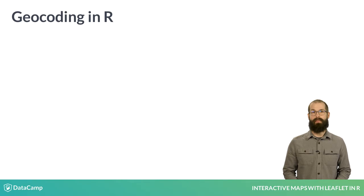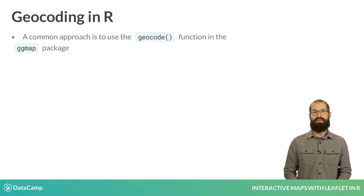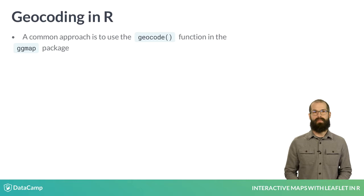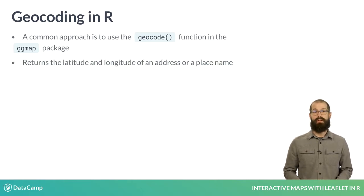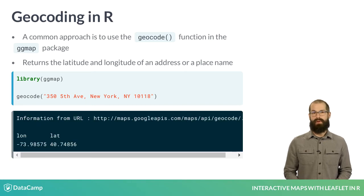Before we set the default view of our map, we need to determine where we want our users to focus their attention. Once we select a location, like DataCamp's New York office, we can use the geocode function from the ggmap library to geocode an address or the name of a place. We pass the geocode function a string containing an address like 350 5th Avenue, New York, and the function returns a coordinate pair that we can use to map the location.